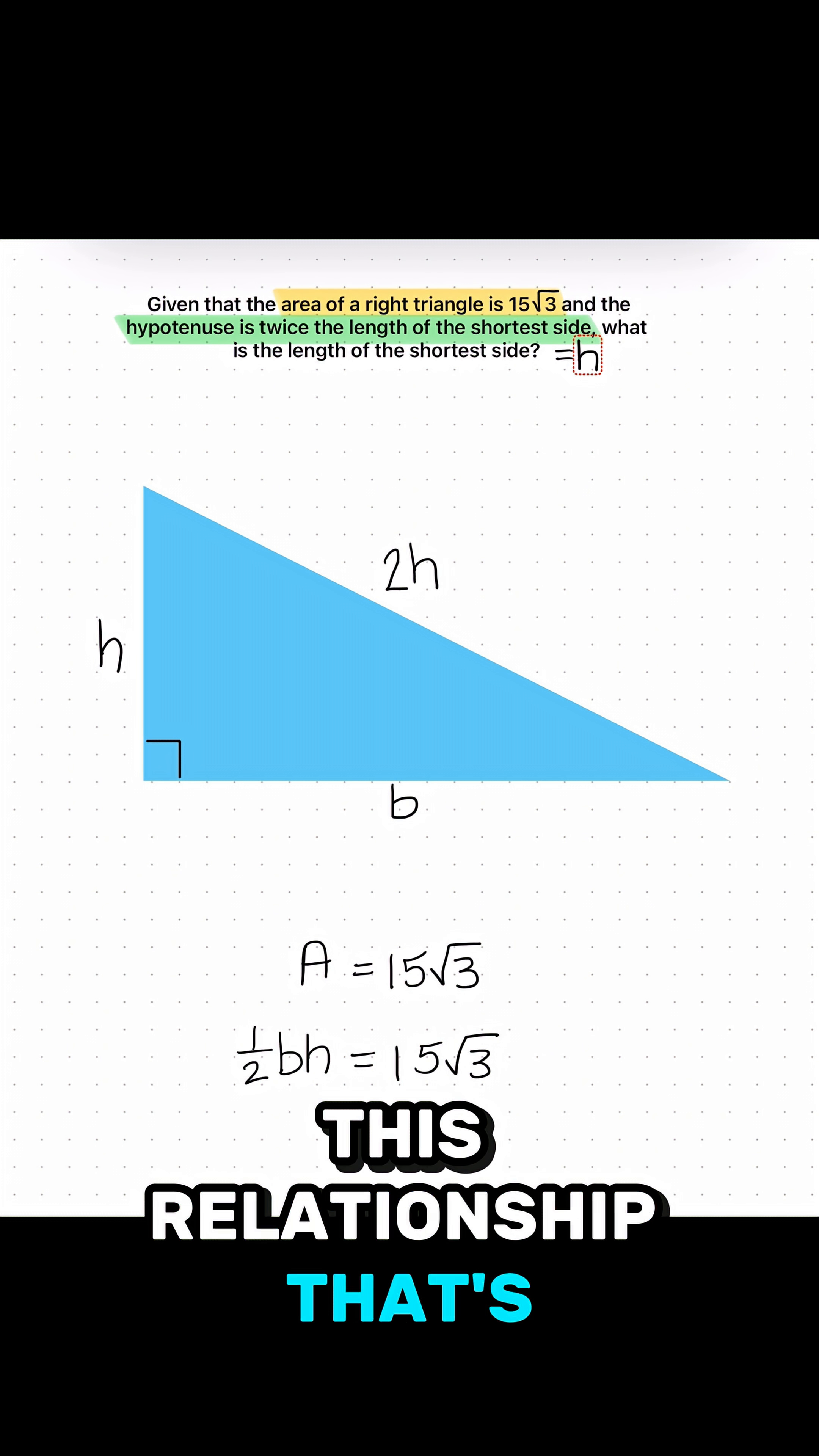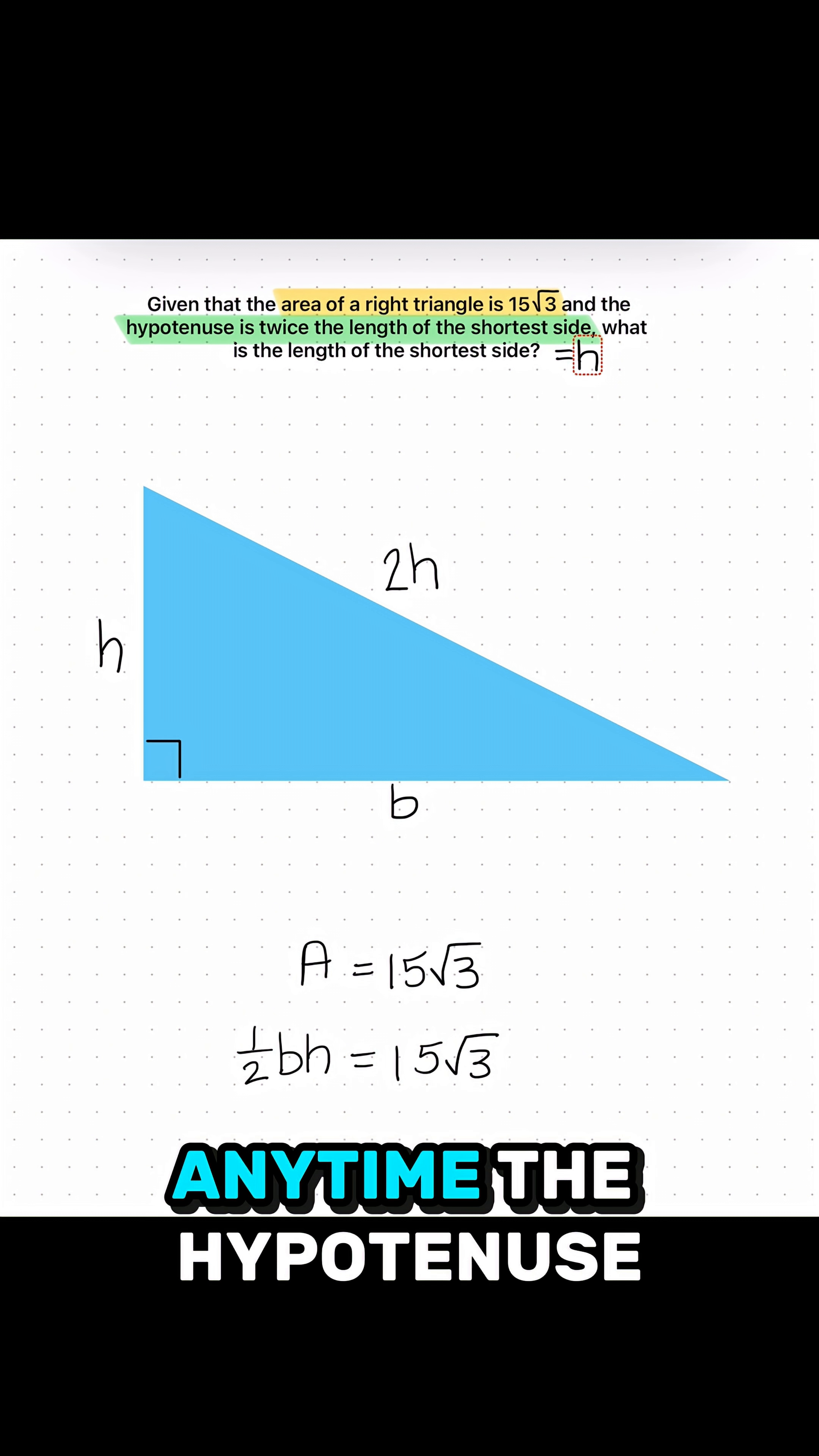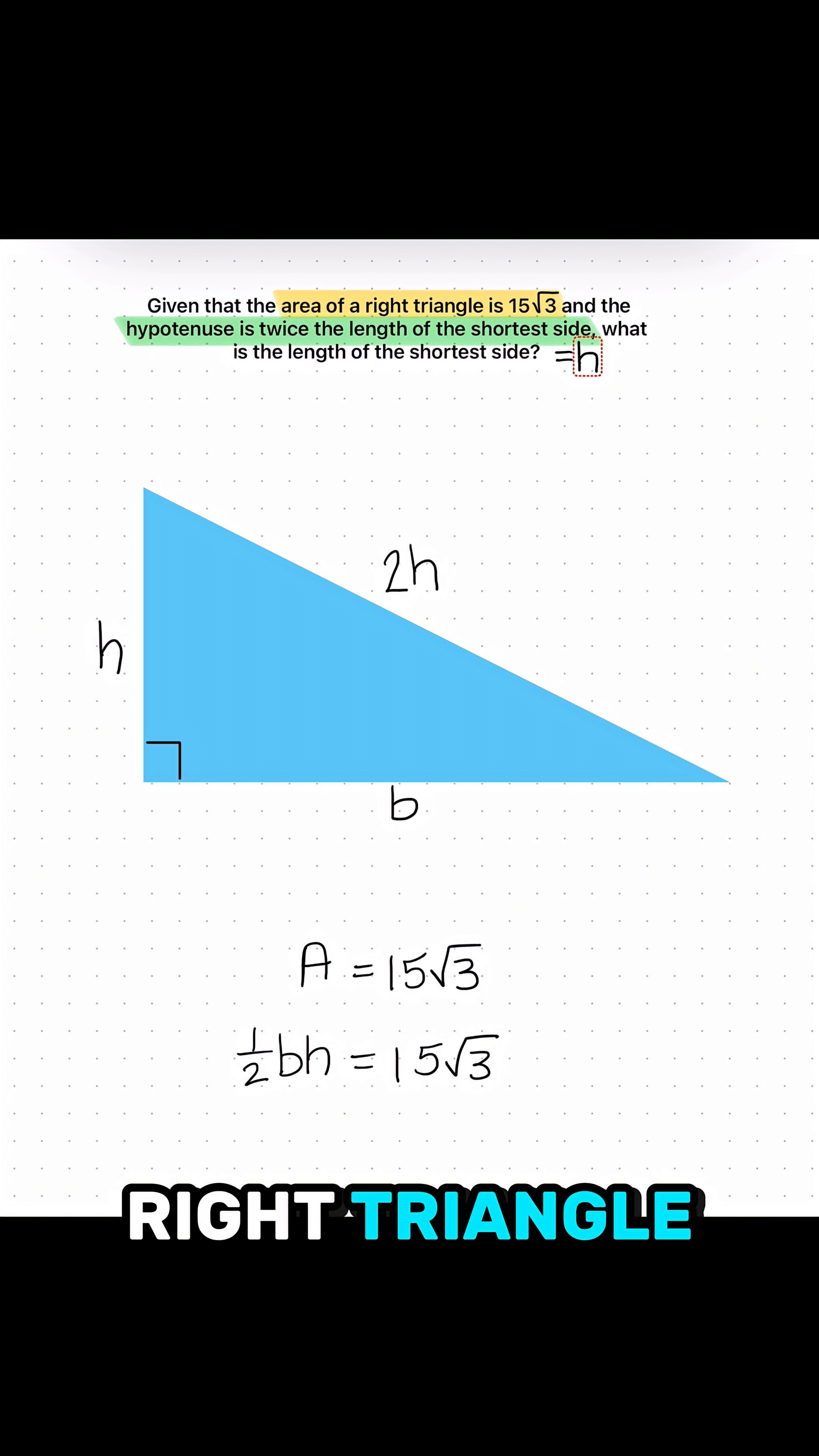Right now, this relationship that's highlighted in green tells me that I'm dealing with a 30-60-90 triangle. Why? Because anytime the hypotenuse is twice the length of the shortest side on a right triangle, you're dealing with a special right triangle. So that means that this angle here is 30, this angle here is 60.